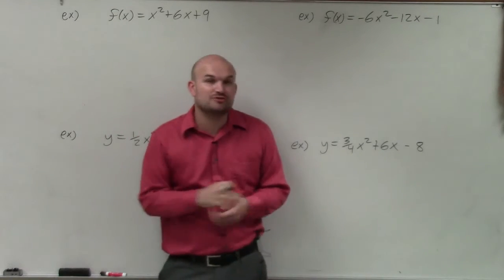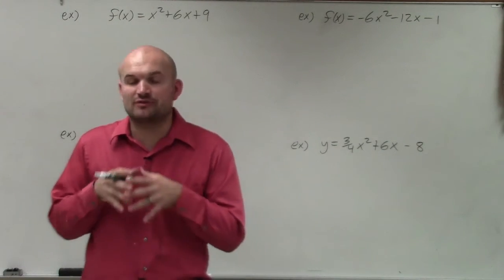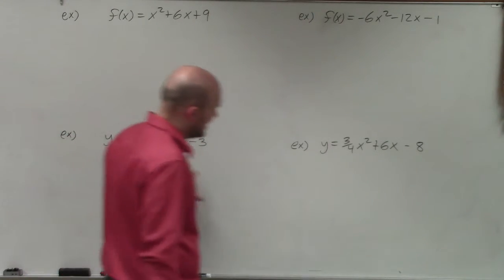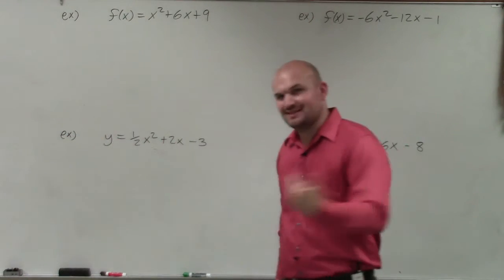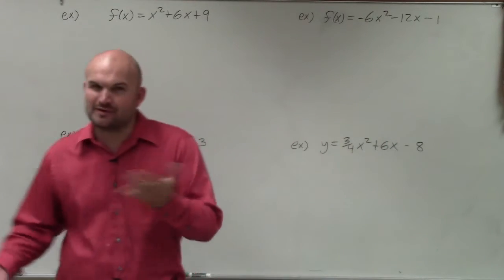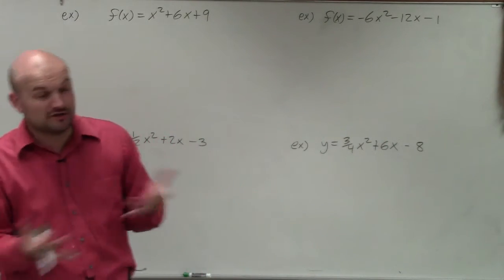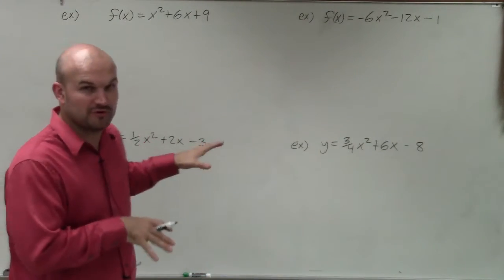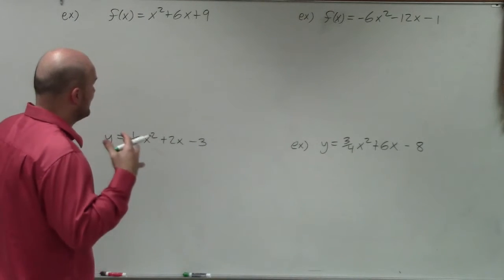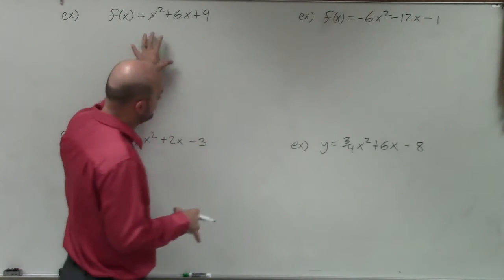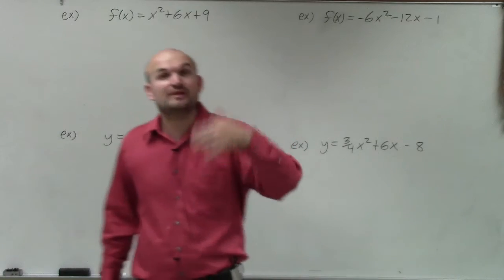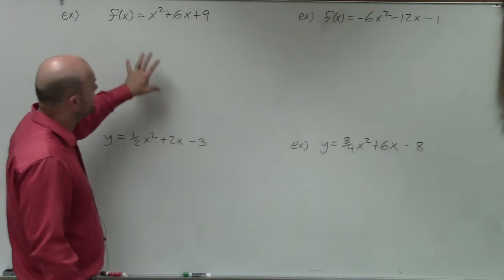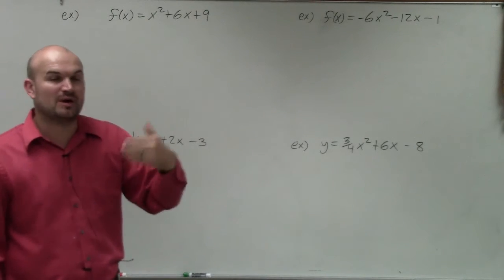Welcome, ladies and gentlemen. What I'd like to do is show you how to graph a quadratic using the equation for a vertex as well as axis of symmetry. I have two functions and two equations — they're basically going to be the same thing, just a little different. When you have a quadratic in standard form, you can either complete the square, rewrite it in vertex form and graph using transformations, or we can identify the axis of symmetry as well as the vertex.